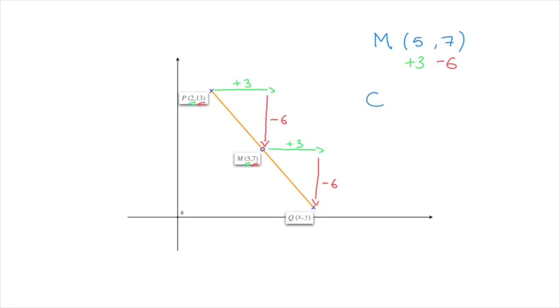So point Q has coordinates 5 plus 3, which is 8, and 7 minus 6, which is 1. And we're done. We've just found the coordinates of the endpoint Q.